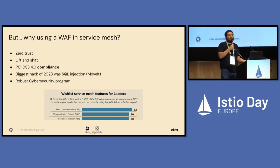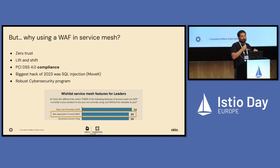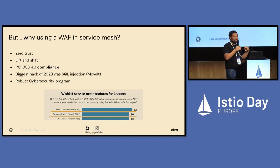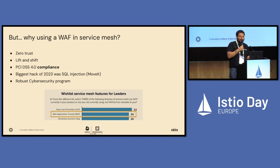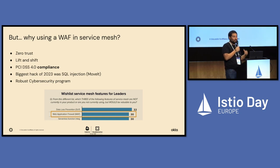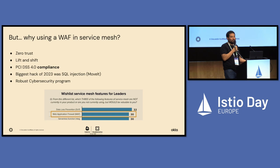And because you want to run a cybersecurity program that is robust — that has different layers of protection, no matter whether they intercept or have joint parts — you still want different levels of protection. As per the Solo 2023 survey, the service mesh feature most requested by leaders: WAF is number two at 30%.